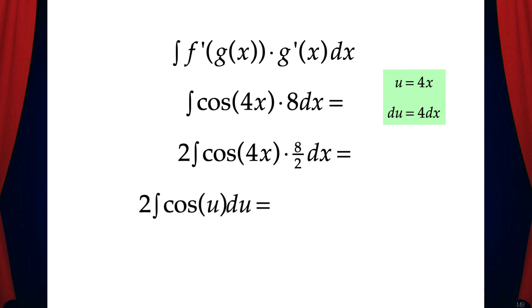Let's make those substitutions. But remember in this case we need to multiply the entire integral by 2. This gives us 2 times the integral of cosine u du. And if we find the antiderivative, we get 2 sine u plus c. But remember u is 4x. So our final answer is 2 sine 4x plus c.